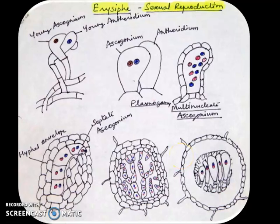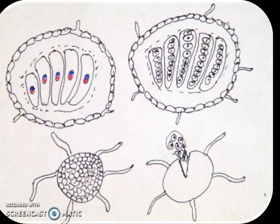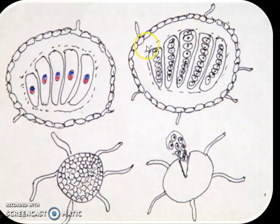At the tip of the dikaryotic hyphae, the tip cell undergoes karyogamy — fusion of male and female nuclei — forming a diploid nucleus. The diploid nucleus then divides first meiotically, then twice mitotically, to form eight ascospores within that structure, which we now call an ascus. In each ascus, eight ascospores are formed, and there are many such asci formed within one developing cleistothecium.